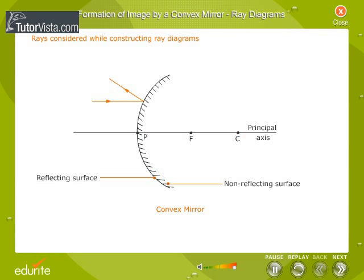Although an object emits rays of light in all directions, we need to consider only two convenient rays. The image is formed at the point of intersection of these reflected rays. Shown here are the rays that are generally considered while constructing ray diagrams.